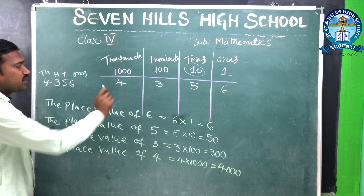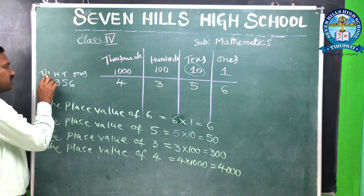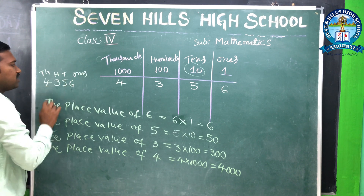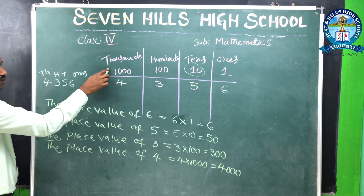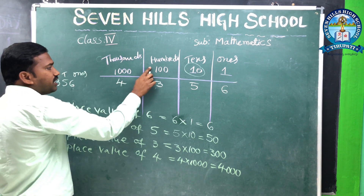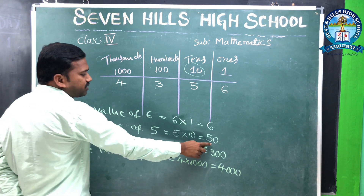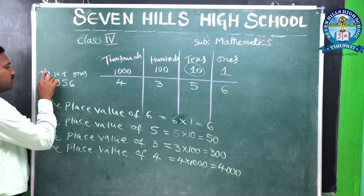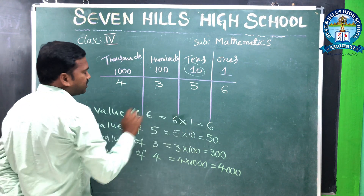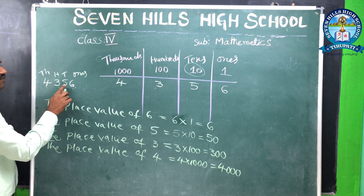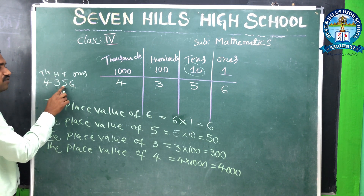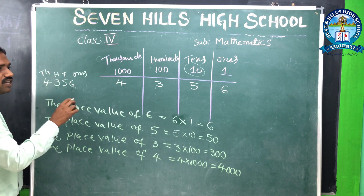Now read that number. 4 is in the thousands place, 3 is in the hundreds place, 5 is in the tens place, 6 is in the ones place. So we read the number as 4356. This is the way to read the number.